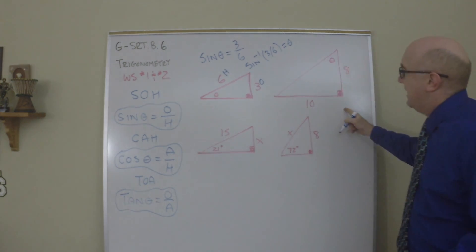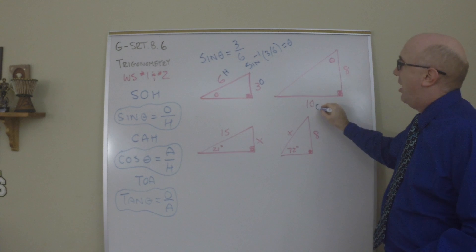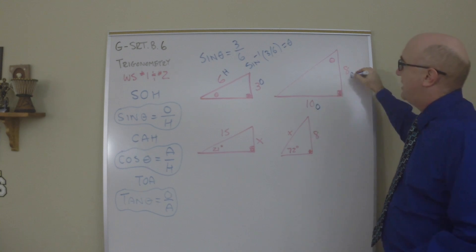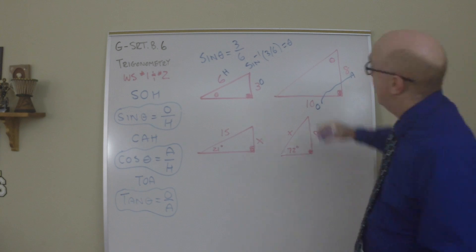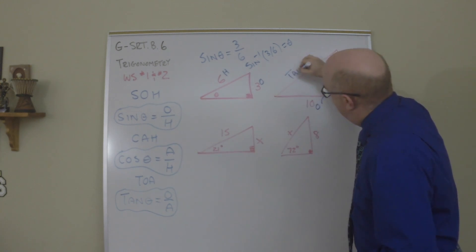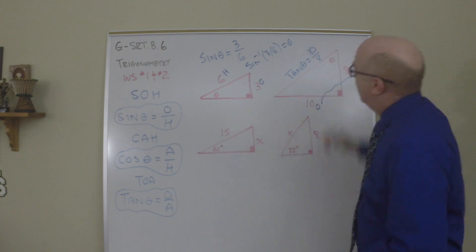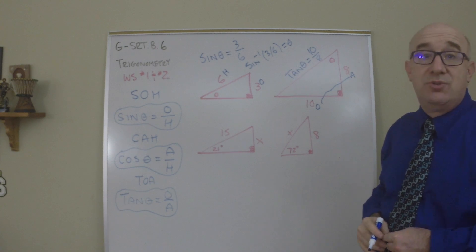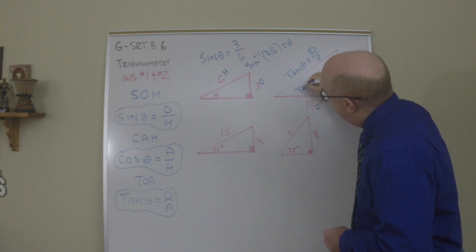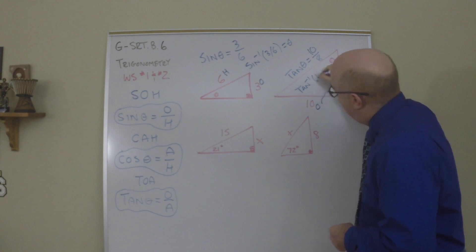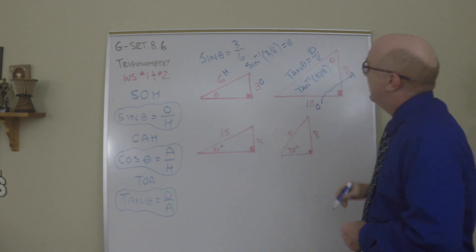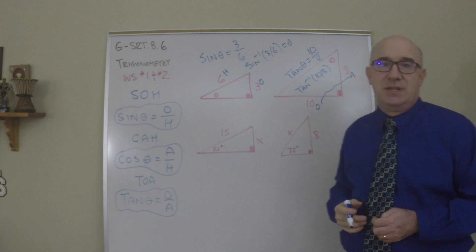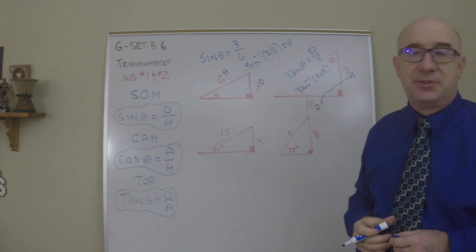Now in this case our angle is up here. This would be our opposite and this would be our adjacent. This is the tangent ratio between these two, and so it would be the tangent of our angle is equal to 10 over 8. Now again when you find an angle you always use the inverse. So we would do the inverse of that tangent is 10 divided by 8 and whatever that number gives us is the actual angle size.